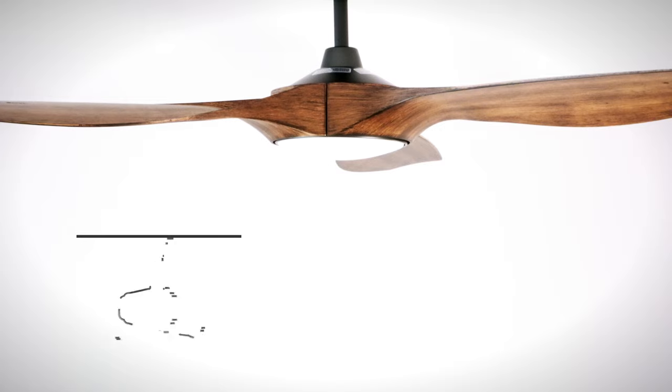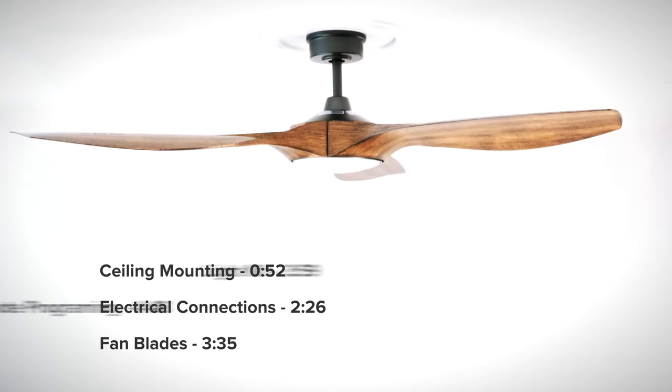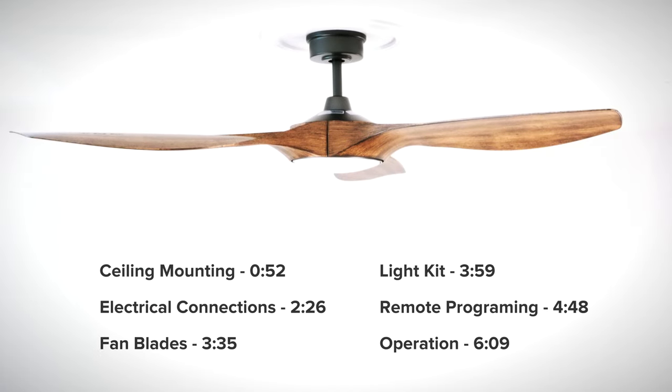The fan can be installed on regular ceilings or ceilings with a maximum slope of 18 degrees. Use the menu to skip ahead or continue watching for the complete installation guide.